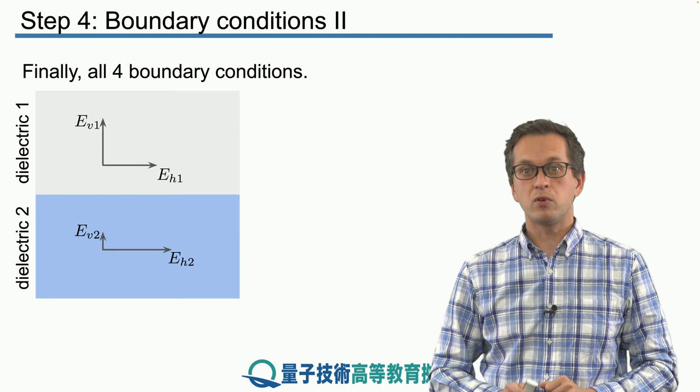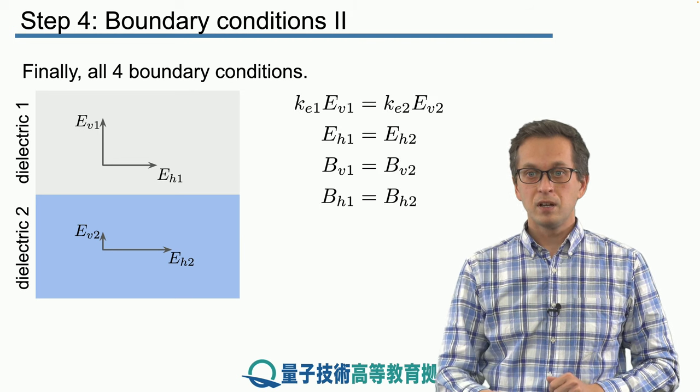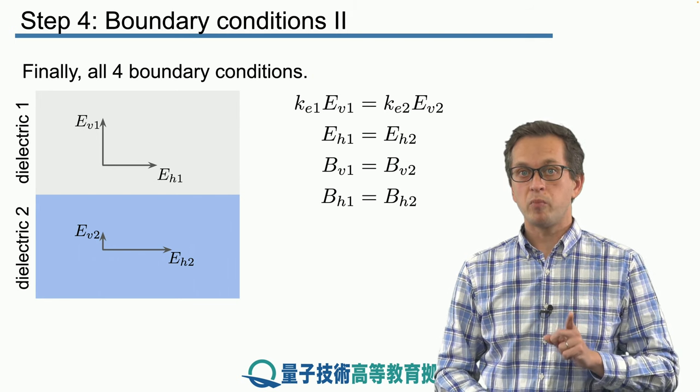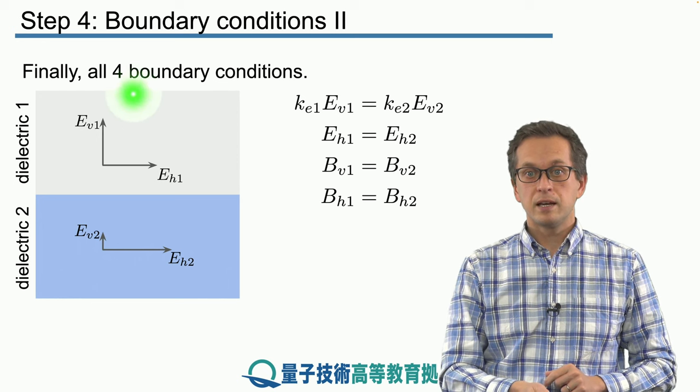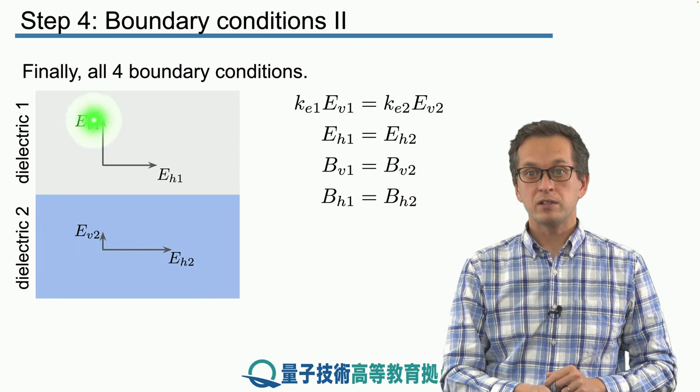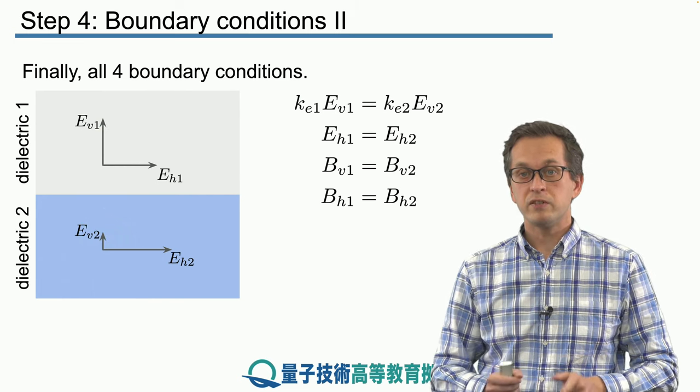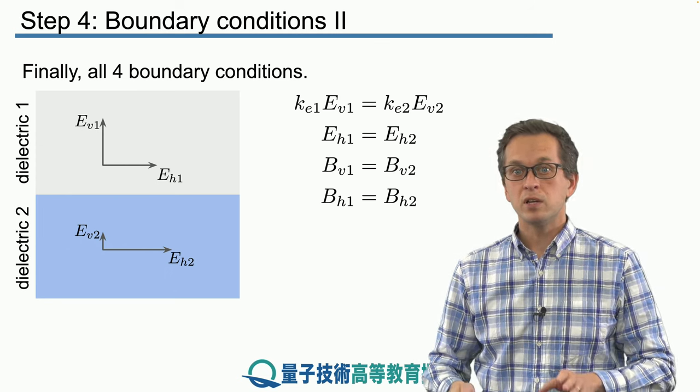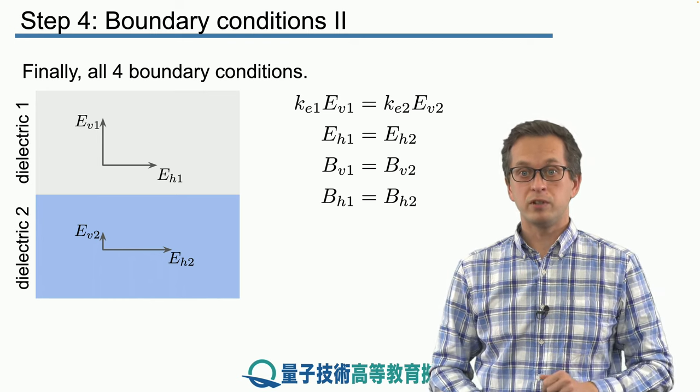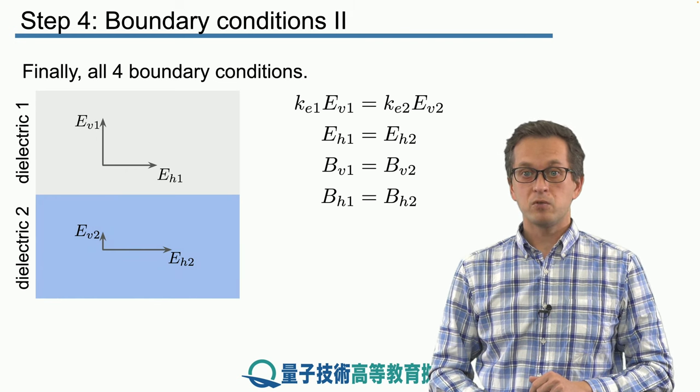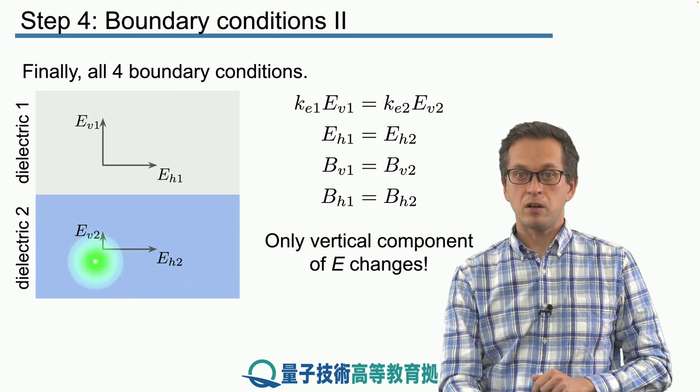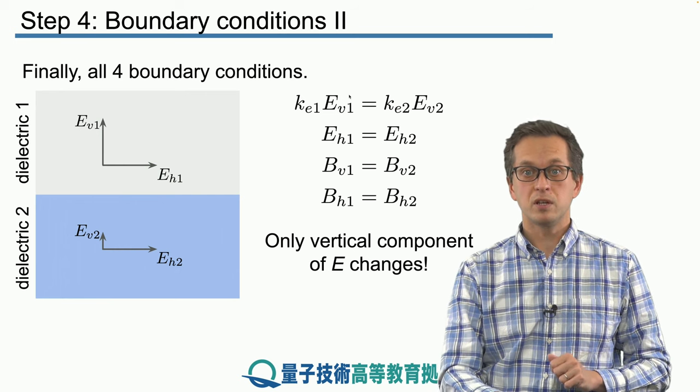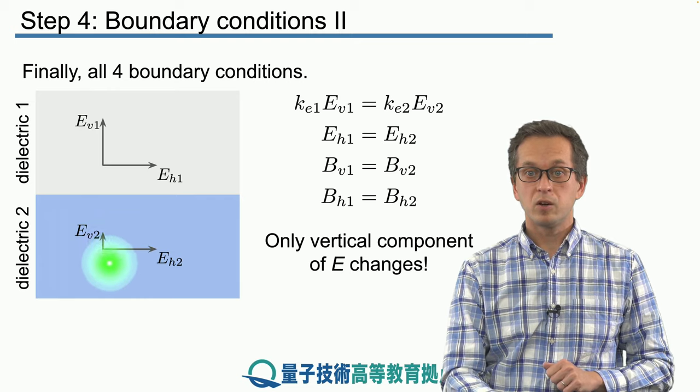Let's summarize and write all four boundary conditions on one slide. We see that the only boundary condition that produces some change is the top one for the vertical component of the electric field. In other words, as our electromagnetic wave travels, the length of this vector changes, and the change is given by the ratio of Ke1 and Ke2. All of the other components, EH1, Bv1, BH1, and so on, also for the dielectric 2, do not change. We get an image like this. This component, EH1, is the same as EH2, same for the magnetic field components. The only thing that changes is EV1 compared to EV2.